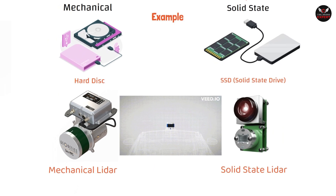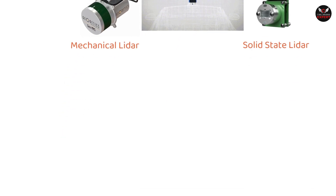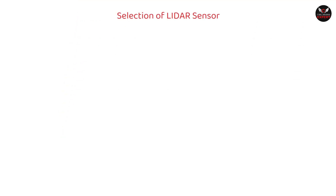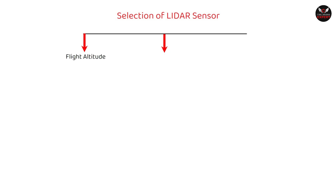Now let's understand what factors to consider before selecting a LiDAR sensor. Basically, there are three important factors used during LiDAR sensor selection: first, altitude; second, accuracy; third, application.